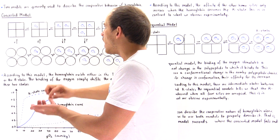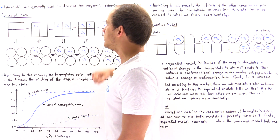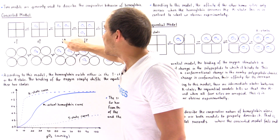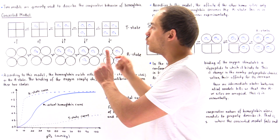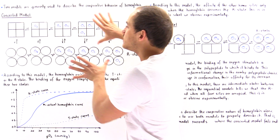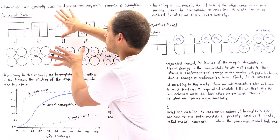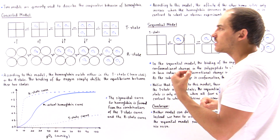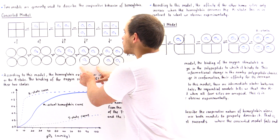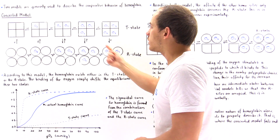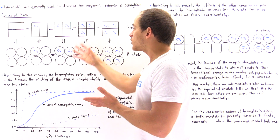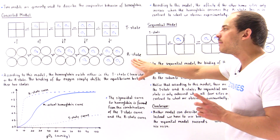If we add one more oxygen so that two heme groups are filled, the arrow toward the R state becomes longer, and now the two arrows are equal in size — meaning both states exist in the same proportion, 50-50. If we add one more oxygen, the equilibrium now shifts toward the R state, and that state will predominate.